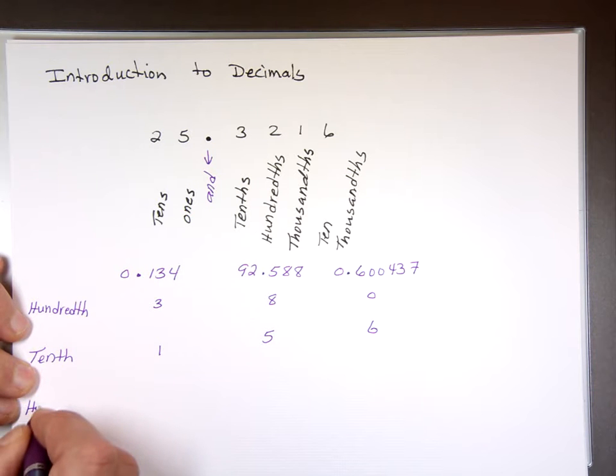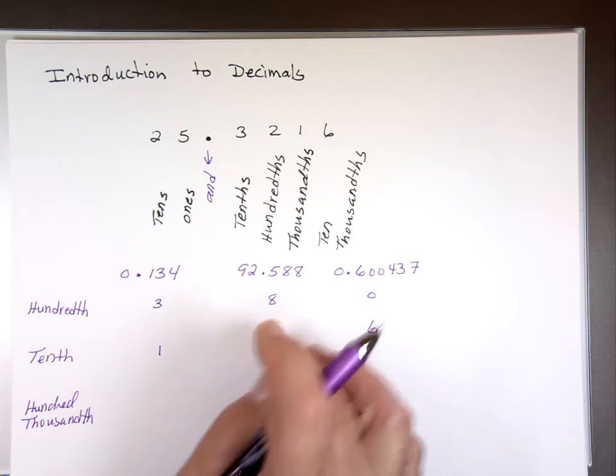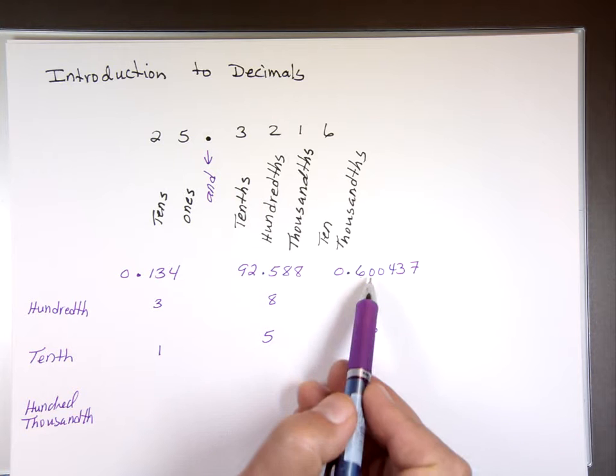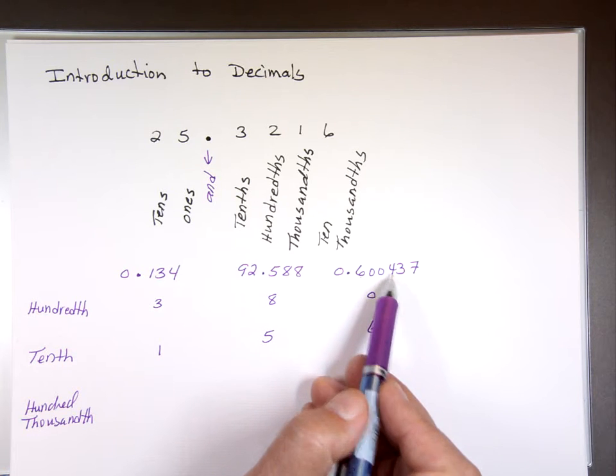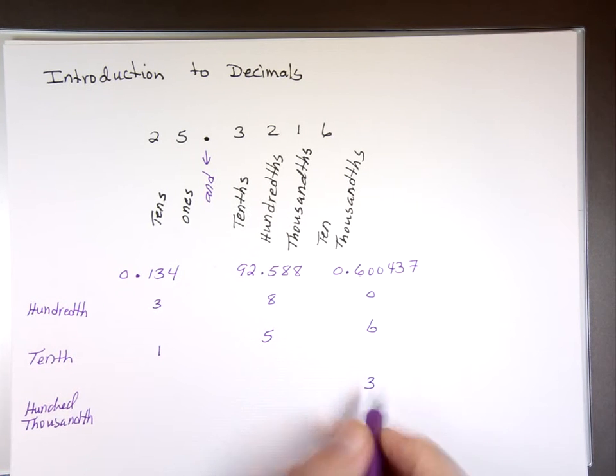Hundred thousandth. Well, I don't have a hundred thousandth here. I don't have a hundred thousandth here. This one, I have a hundred thousand. Which one? That's the tenth, hundredth, thousandth, ten-thousandth, and the three is what? The hundred thousandth.